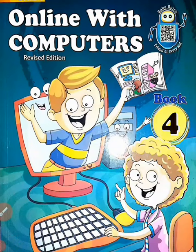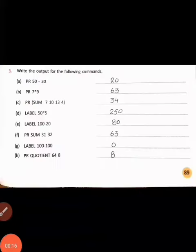Question number 3: Write the output for the following commands. Print 50 minus 30 will print 20. Print 7 asterisk 9 will print 63. Print sum of 7, 10, 13, and 4 will print 34.